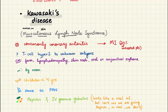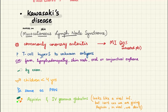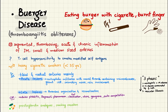Next we have Kawasaki's disease, also known as mucocutaneous lymph node syndrome — the name itself suggests all the symptoms. One key point: it commonly affects the coronary arteries, leading to MI. Its treatment involves aspirin, and remember its association with Reye's syndrome.